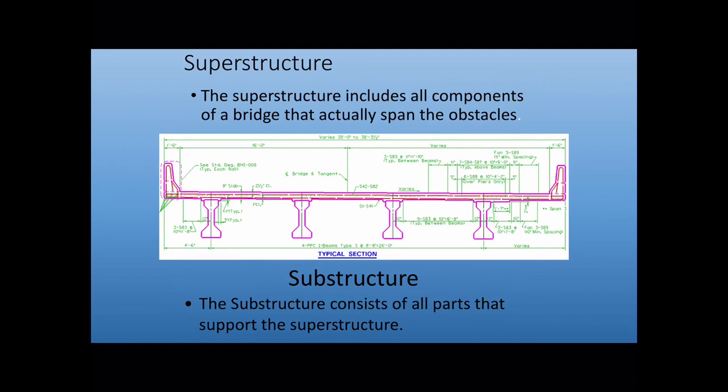The first thing is the superstructure. The superstructure includes all components of a bridge that actually span the obstacles. So these are the members that are going out in a horizontal direction. So we're looking at this picture here, everything from these precast I-beams up into the deck and the barrier wall are all considered the superstructure. As far as the state of Kentucky goes, our concrete mix that goes in the superstructure is a class AA concrete.